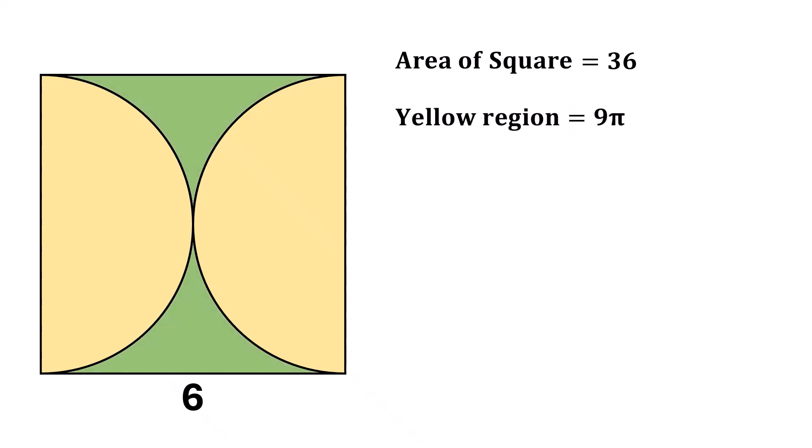Now, focus on the green region. It's simply the area of the square minus the area of the yellow region. So, the area of the green region is 36 minus 9 pi.